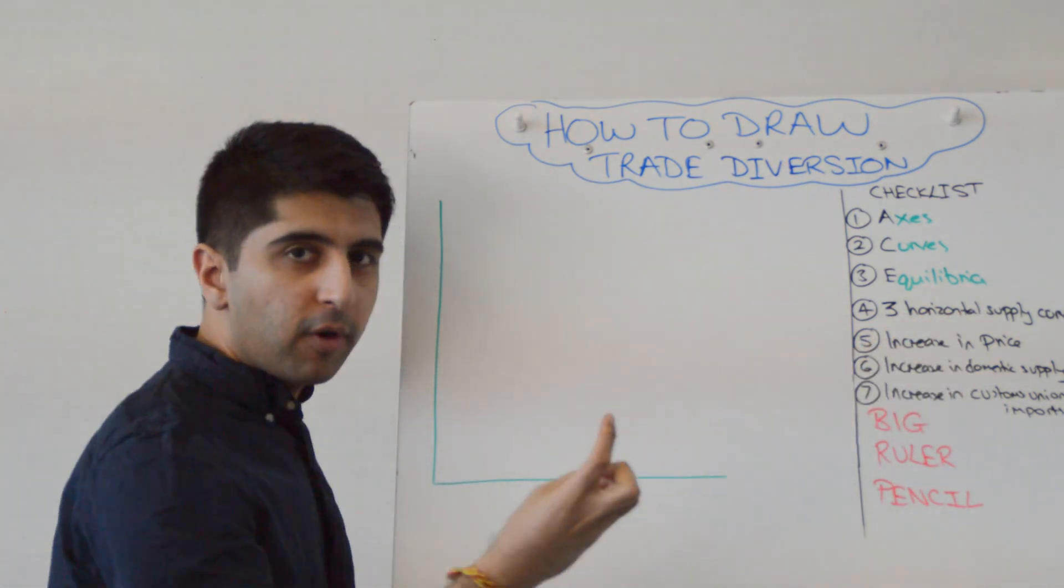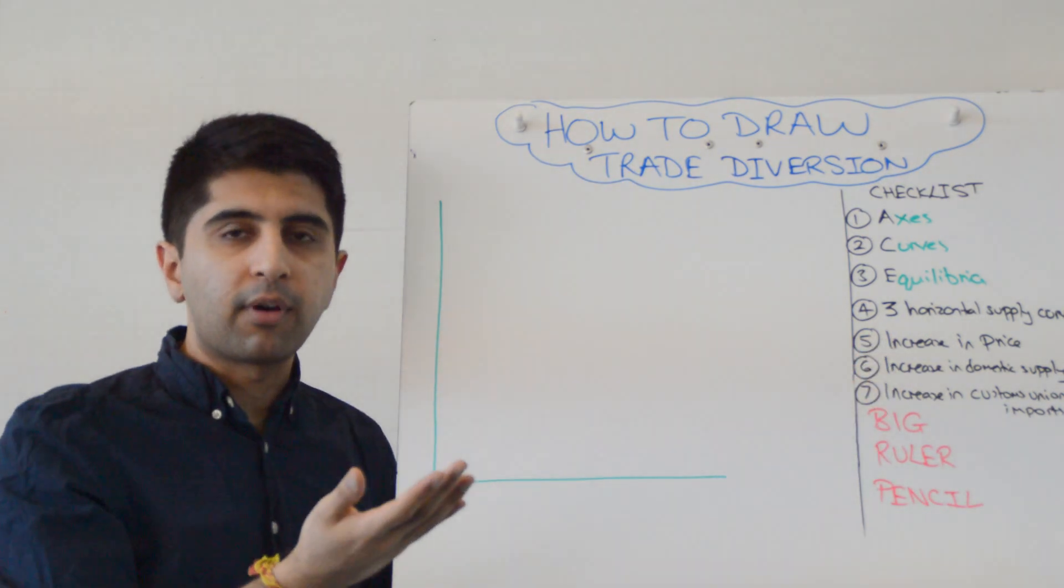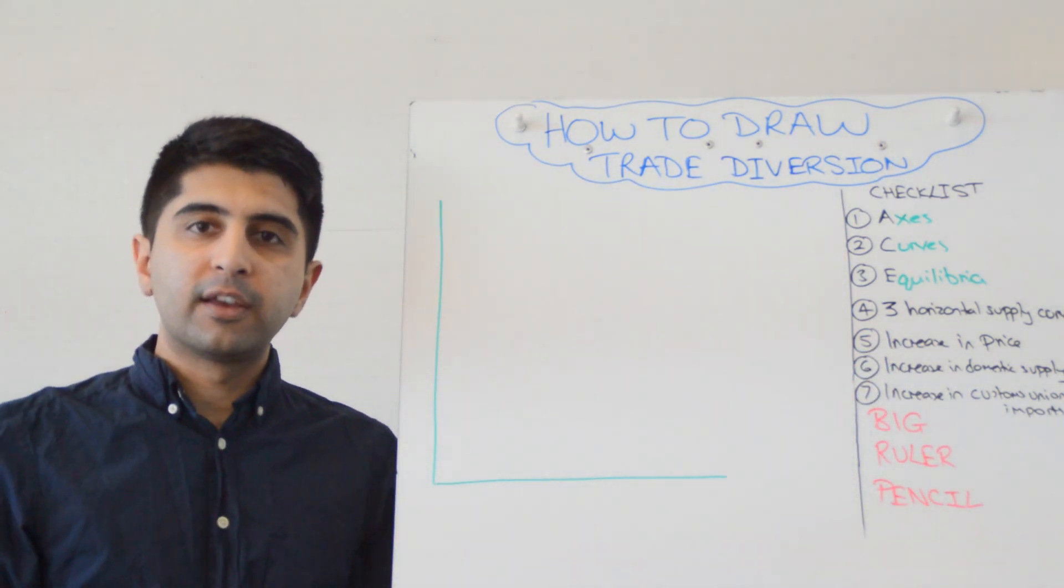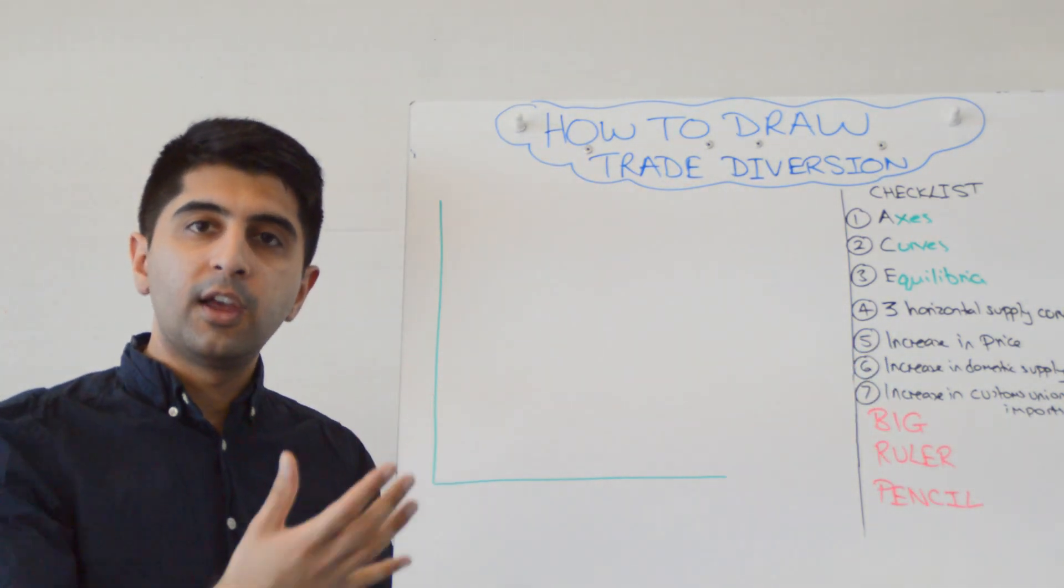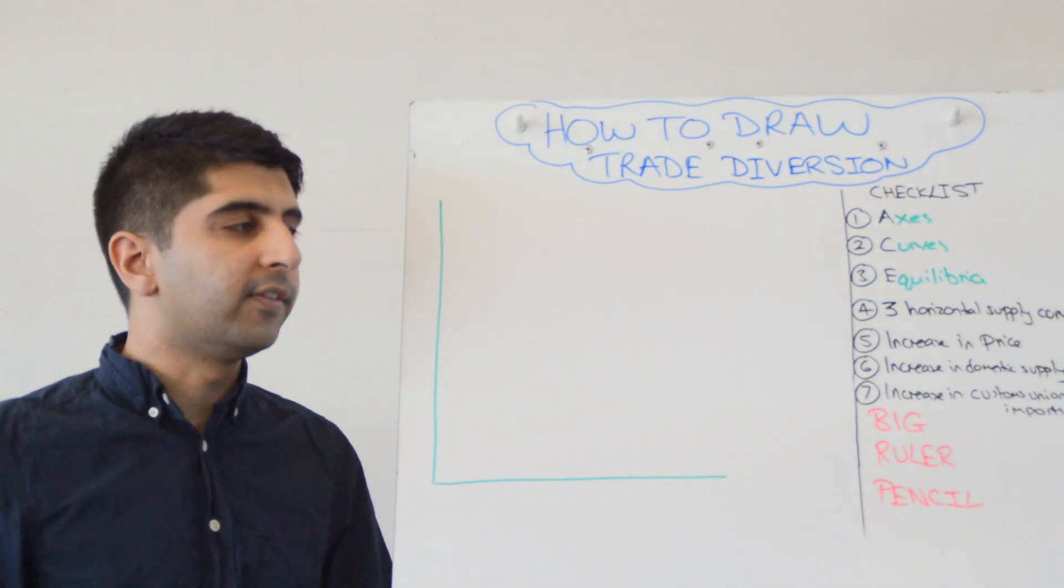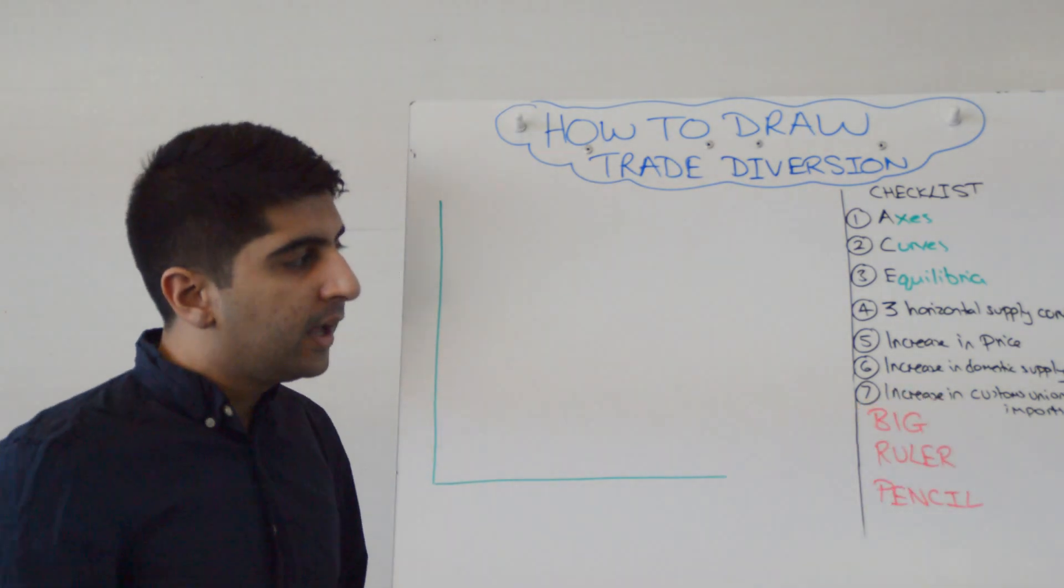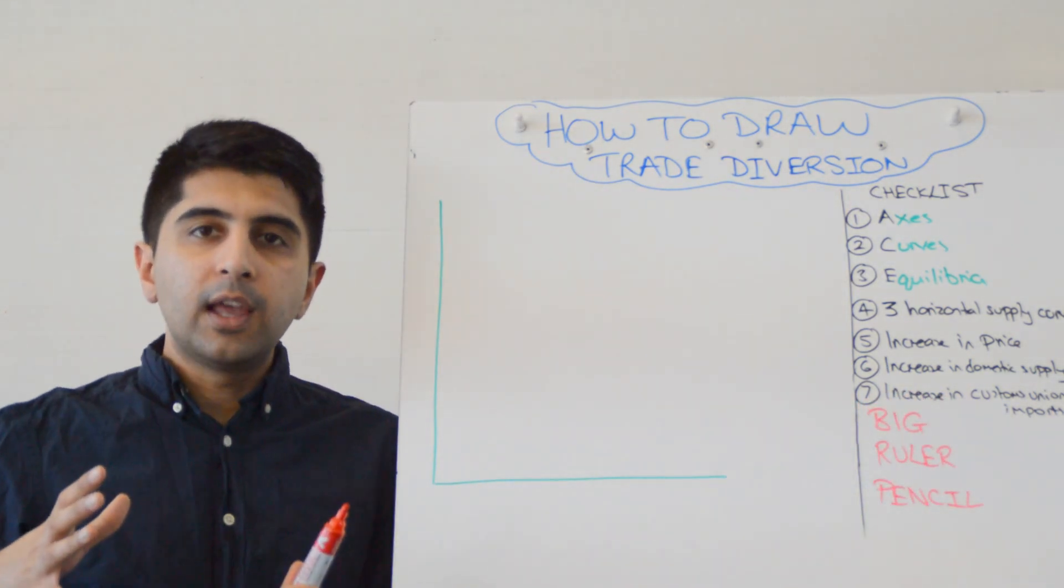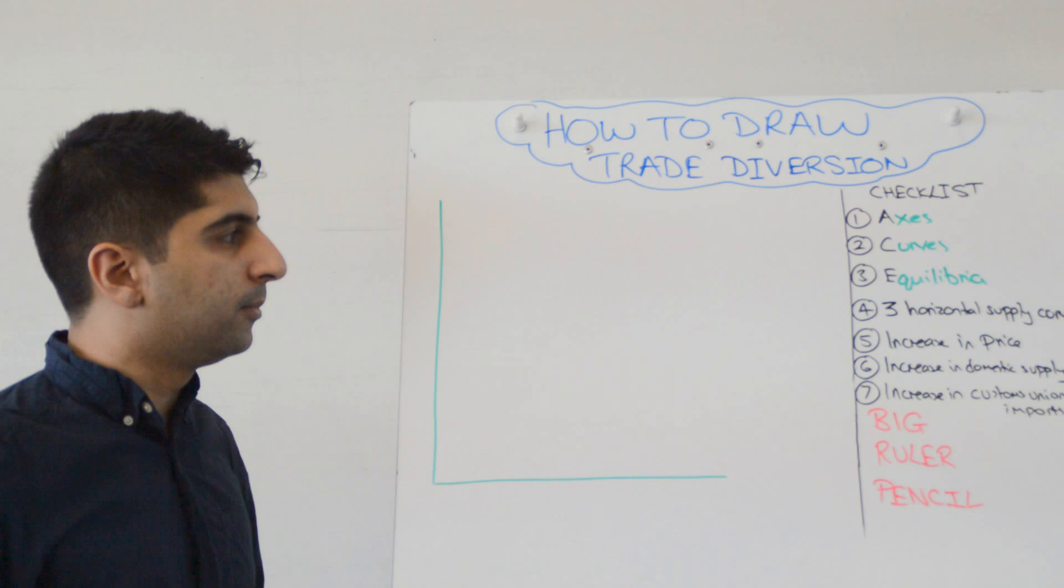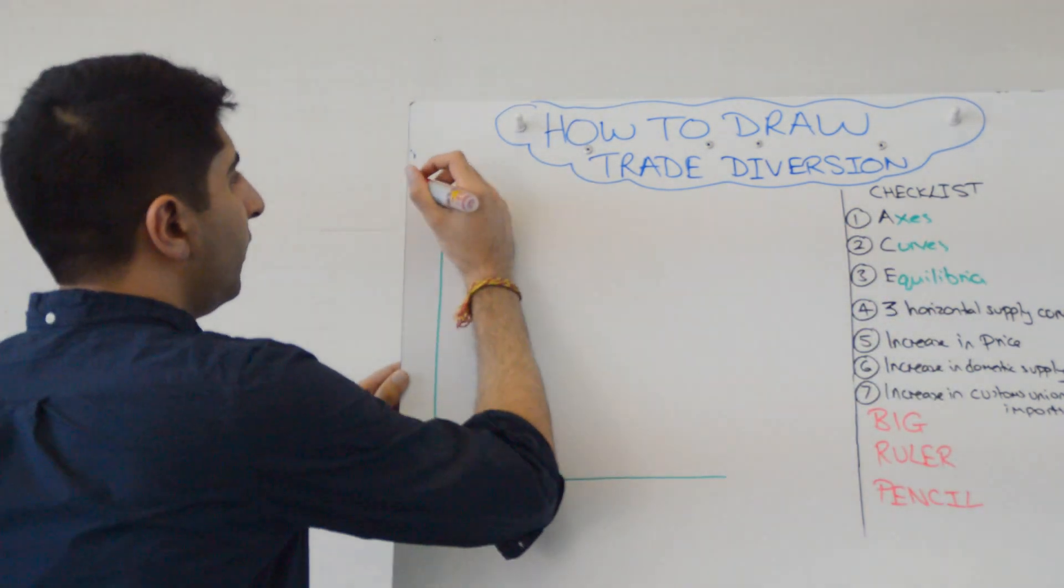We are looking to draw three horizontal supply curves. You should have that in your head. An increase in price as traders diverted away from an efficient producer outside the customs union to an inefficient producer within the customs union. An increase in domestic supply as a result, but also an increase in imports coming in from the customs union. So bear all that in mind when we start drawing this diagram.